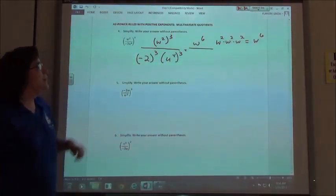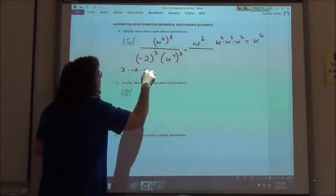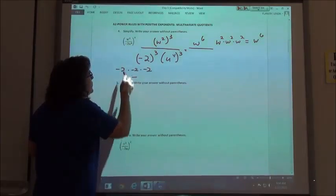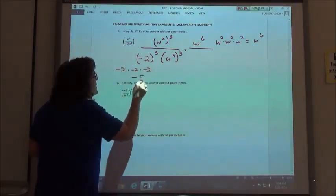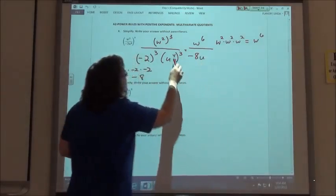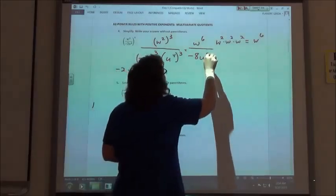Now with our number, we have to do it the normal way. Negative 2 times negative 2 times negative 2. 1, 2, 3 negatives is negative, 2 times 2 is 4, and 4 times 2 is 8, so I get negative 8. And then I'm going to have u to the, again I have to multiply those exponents, so 4 times 3 would be 12.